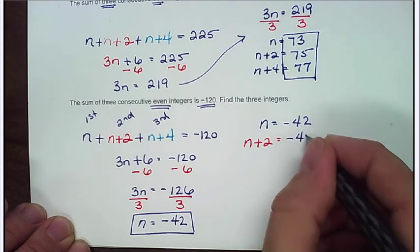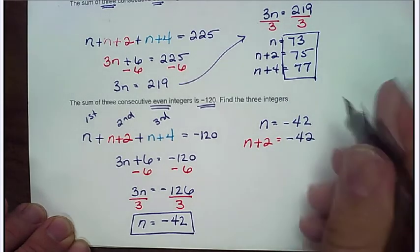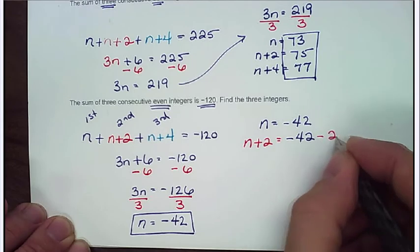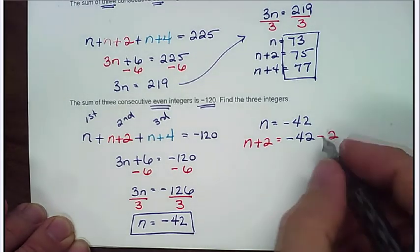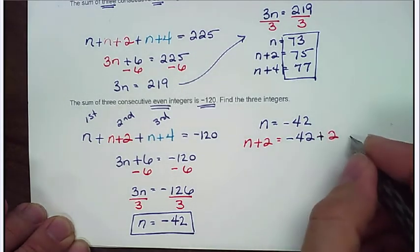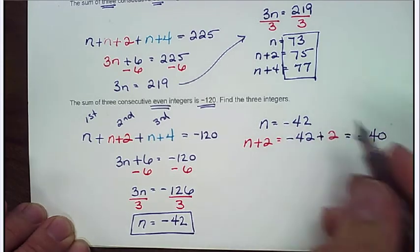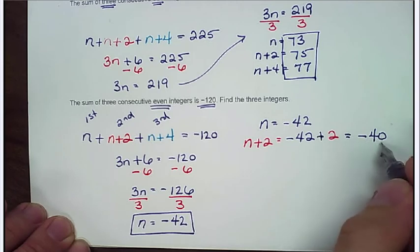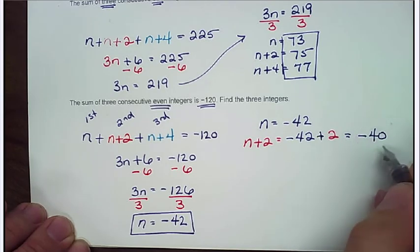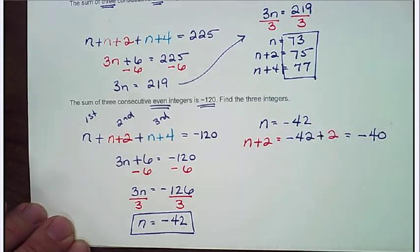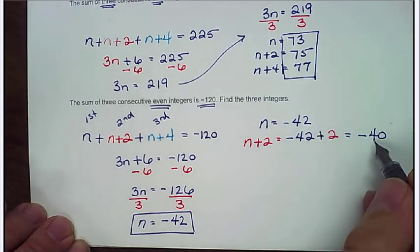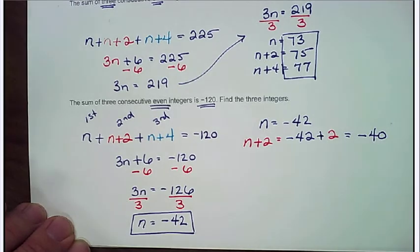But now we need to deal with n plus 2. Which n plus 2 is going to equal negative 42 plus 2. Well, notice that my signs are different. And when my signs are different, I actually have to subtract. So that's going to be negative 42 plus 2. That's actually going to give me negative 40. Remember that actually the smaller the number in the negative means that it's larger. Because if I owe you $40, I owe you less than if I owed you $42. I'm bigger in debt with 42.